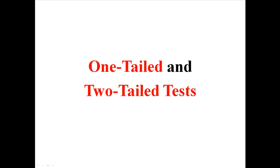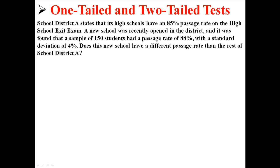When you're first starting off with hypothesis testing, you're going to be doing either one-tailed or two-tailed tests. Here's an example: School District A states that its high schools have an 85% passage rate on the high school exit exam. A new school was recently opened in the district, and a sample of 150 students had a passage rate of 88% with a standard deviation of 4%. Does this new school have a different passage rate than the rest of School District A?